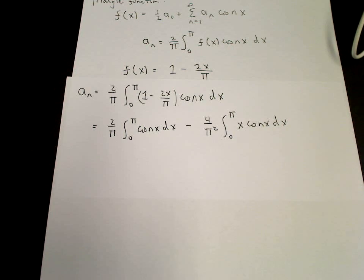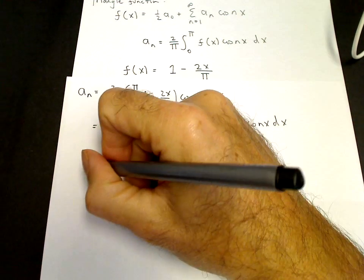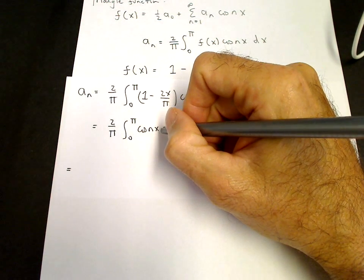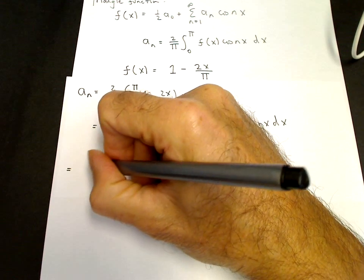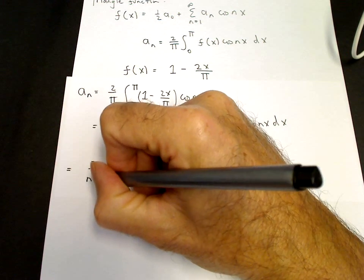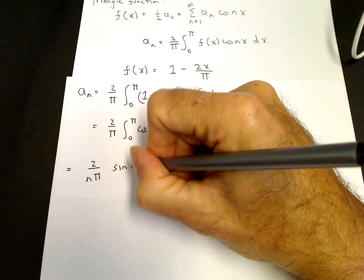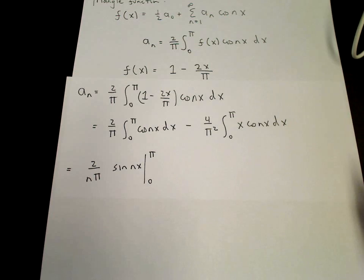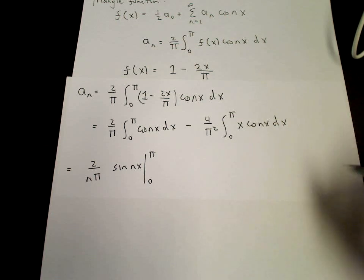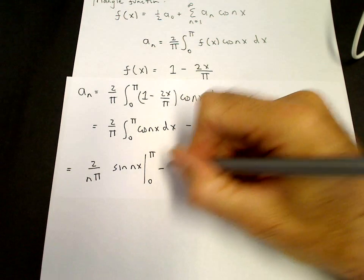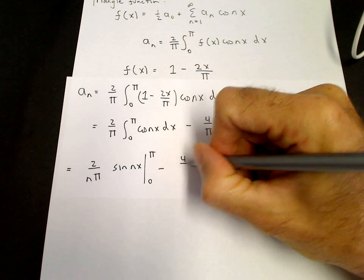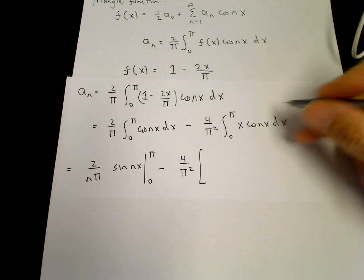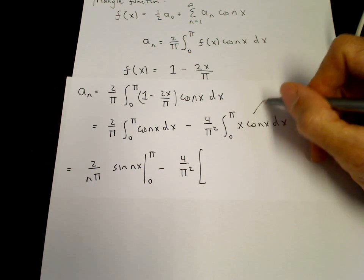The first integral is straightforward: the integral of cosine(nx) is sine(nx) divided by n. So we have 2 over nπ times sine(nx) evaluated between 0 and π. For the second integral, minus 4 over π², we need to use integration by parts.